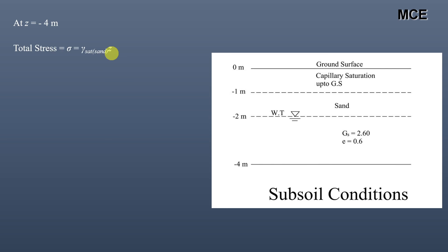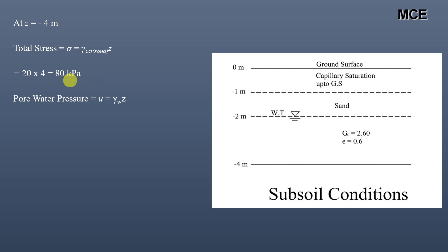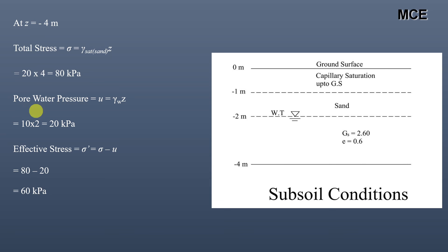At Z = 4 meters depth: total stress = γ_sat × Z = 20 × 4 = 80 kPa. Pore water pressure = γ_w × Z = 10 × 2 = 20 kPa (positive, as this point is 2 meters below the water table). Effective stress = total stress − pore water pressure = 80 − 20 = 60 kPa. This is the value of total stress, pore water pressure, and effective stress at Z = 4 meters.